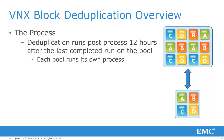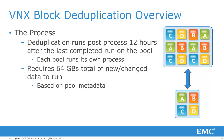VNX block deduplication runs post-process, 12 hours after the last completed run on the pool. Each pool runs its own deduplication process. Before the deduplication process runs, the process checks for 64GB of new or changed data. If 64GB of new or changed data is not found, deduplication is not run and the 12-hour timer is reset. The pool metadata is checked for the 64GB of changes, which eliminates the need to check all of the deduplicated data within the pool.